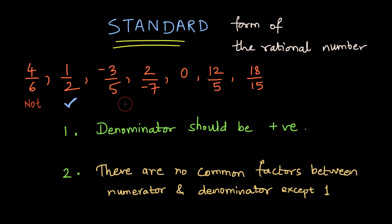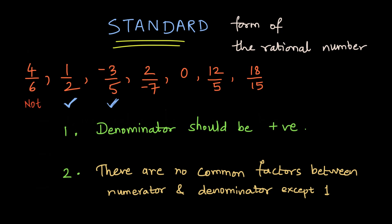For minus 3 by 5, the denominator is 5 which is positive, and there are no common factors between minus 3 and 5, so minus 3 by 5 is also in the standard form. For 2 by minus 7, the denominator has a negative sign, so 2 by minus 7 is not in the standard form.